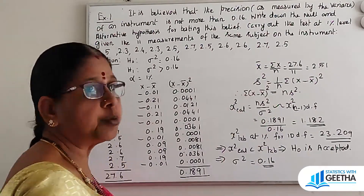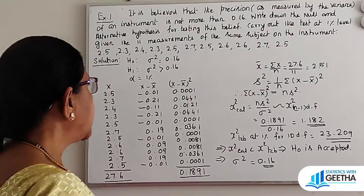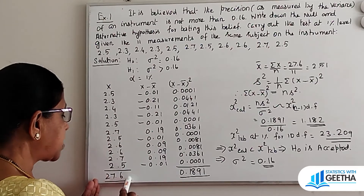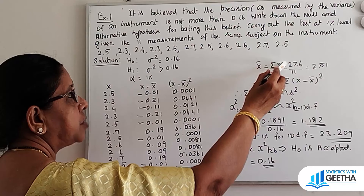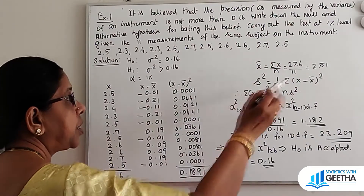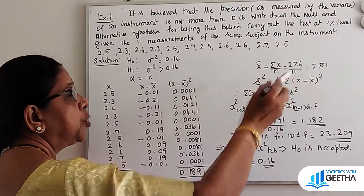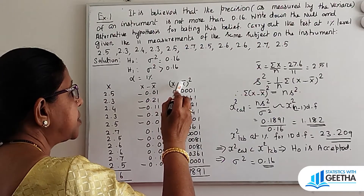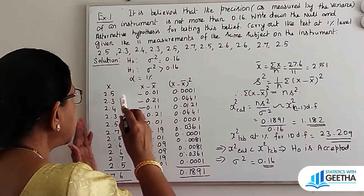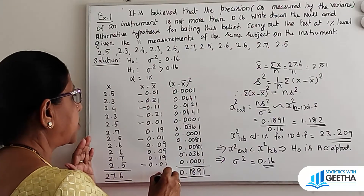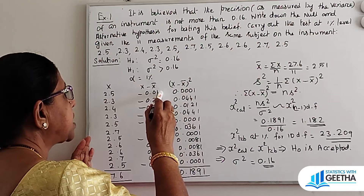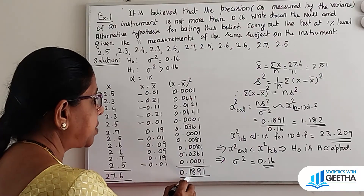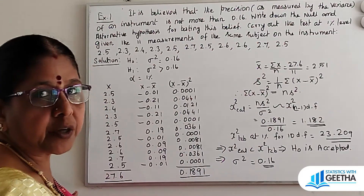Given the sample values, we have the x values. We calculate x bar equal to summation x by n, that is 27.x divided by 11 measurements, giving x bar equal to 2.5. Then for each value we compute x minus x bar, and sum x minus x bar whole square, which gives summation x minus x bar whole square equal to 0.1891.